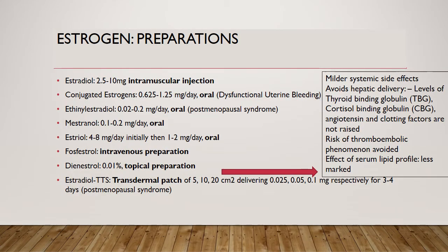Estrogen preparations come in the form of oral tablet, intramuscular injection, vaginal ring, topical cream, topical spray, vaginal cream, and transdermal patches. The transdermal patch has an advantage in that it has milder systemic side effects — it avoids hepatic first-pass delivery, meaning thyroid binding globulin, cortisol binding globulin, angiotensin, and clotting factors are not raised. Therefore, the risk of thromboembolic phenomena is avoided and the effect on serum lipid profile is less marked.